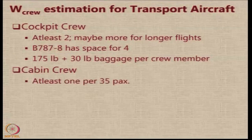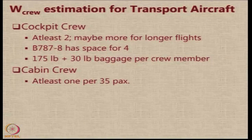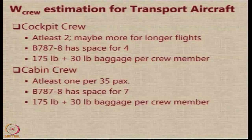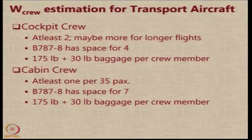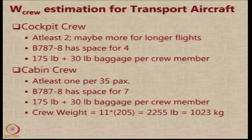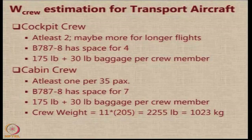In addition to the cockpit crew, we also have cabin crew. At least one cabin crew member will be available to serve and look after the safety of 35 passengers. The Boeing 787-8 has space for 7 cabin crew members. Each crew member is assumed to weigh 175 pounds plus 30 pounds baggage, so 205 pounds per crew member. With 7 cabin plus 4 cockpit — 11 total — the crew weight is 11 × 205 pounds, which is approximately 1023 kg, roughly 1 ton.